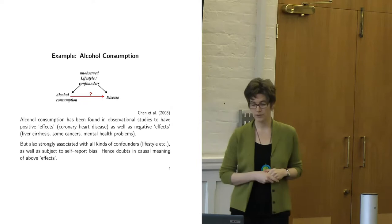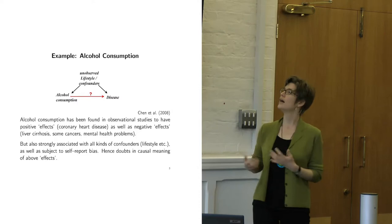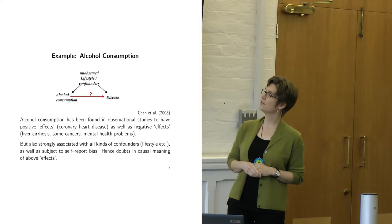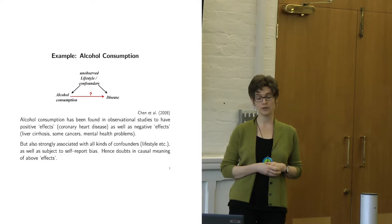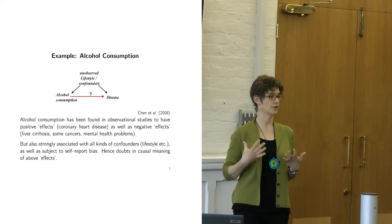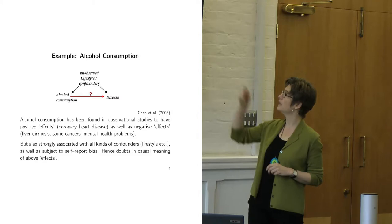Let's go to the example with alcohol consumption. I'm going to use little DAGs — directed acyclic graphs — which have a formal definition. I'm not going to talk much about how DAGs are defined, but there is math behind a graph like this. We are interested in the effect of alcohol consumption on disease, and it's quite obvious that alcohol is confounded with lots of lifestyle factors and other health behaviors, so it's more likely that there is some unobserved confounding still there.